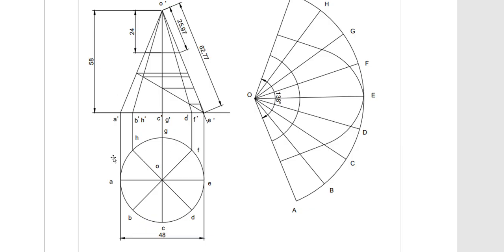Since the height of the cone is 58 mm, you project all these 8 points to the reference line and name them as A', B', H', C', G', D', F', and E'. Since the height of the cone is 58 mm, from the center point you draw a line of 58 mm and draw all those slant generators. This is the top view and this is the front view, which is a triangle of width 48 mm and height 58 mm.